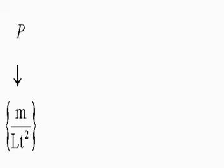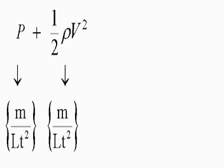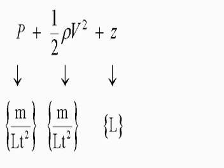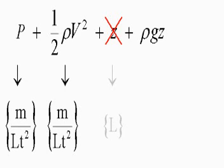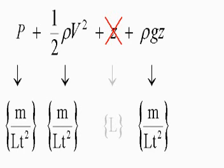Consider Bernoulli's equation, for example. Static pressure p is a force per unit area with dimensions of mass over length times time squared. The dynamic pressure, one-half rho v squared, has to have the same dimensions. Adding the hydrostatic head z doesn't work because it isn't dimensionally consistent. However, we can instead express the head as a pressure rho gz, and now it is consistent.